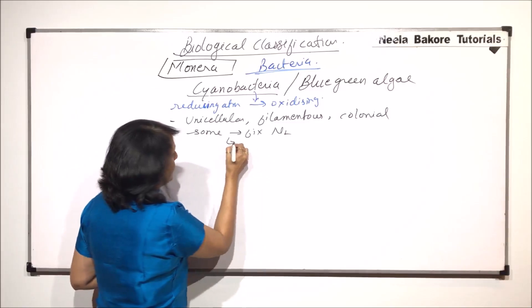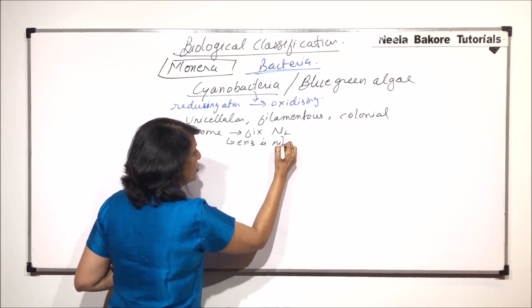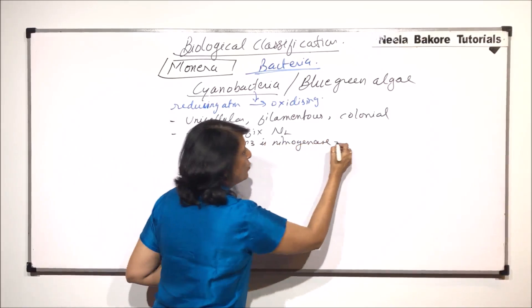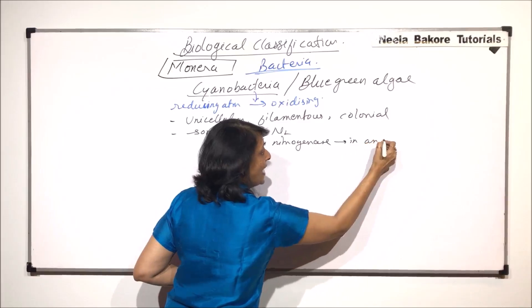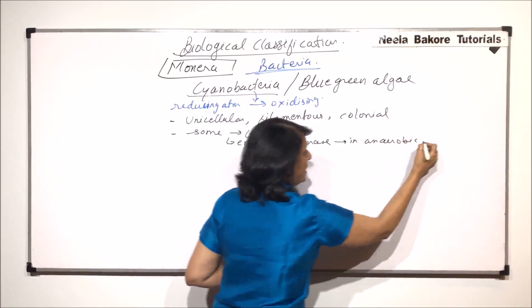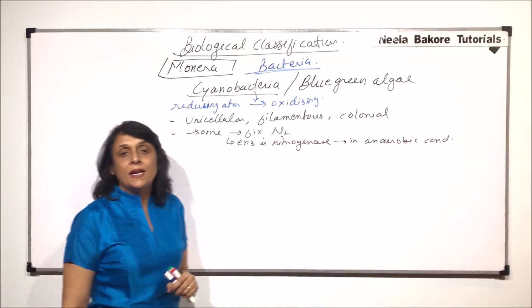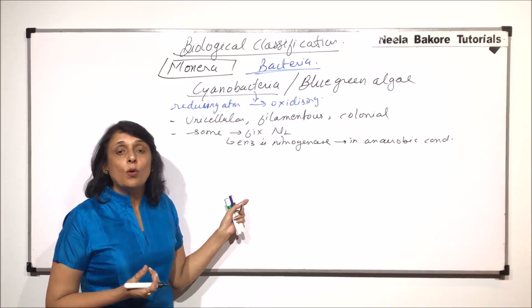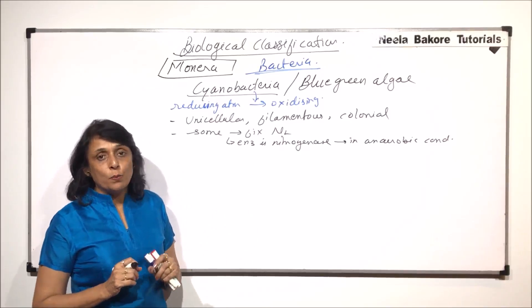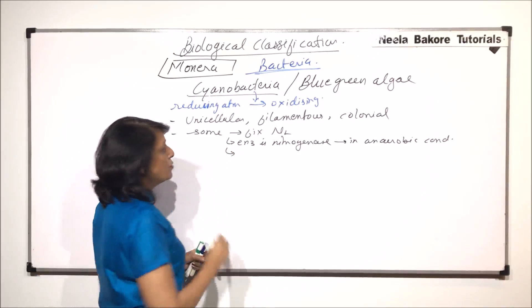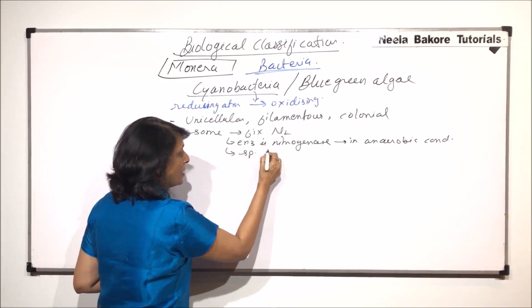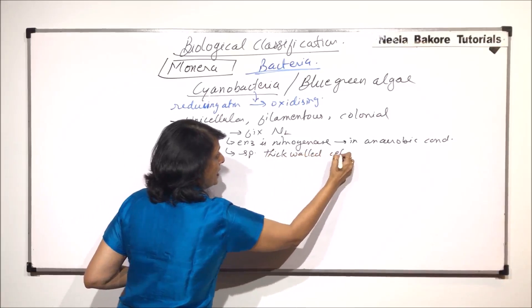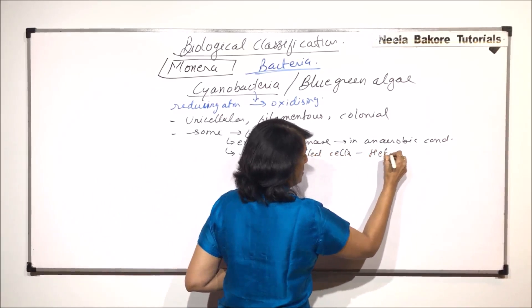Here the enzyme is nitrogenase and this nitrogenase, it works in anaerobic condition. Now when it is working in anaerobic condition and this particular bacterium is producing oxygen on its own, then how does it create that anaerobic condition? This nitrogen fixation takes place in special thick-walled cells which are known as heterocysts.